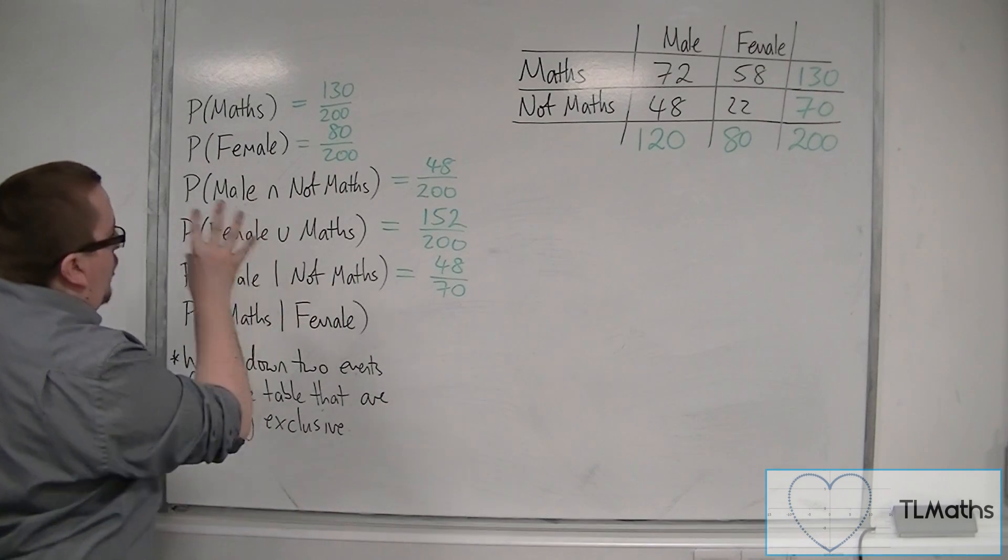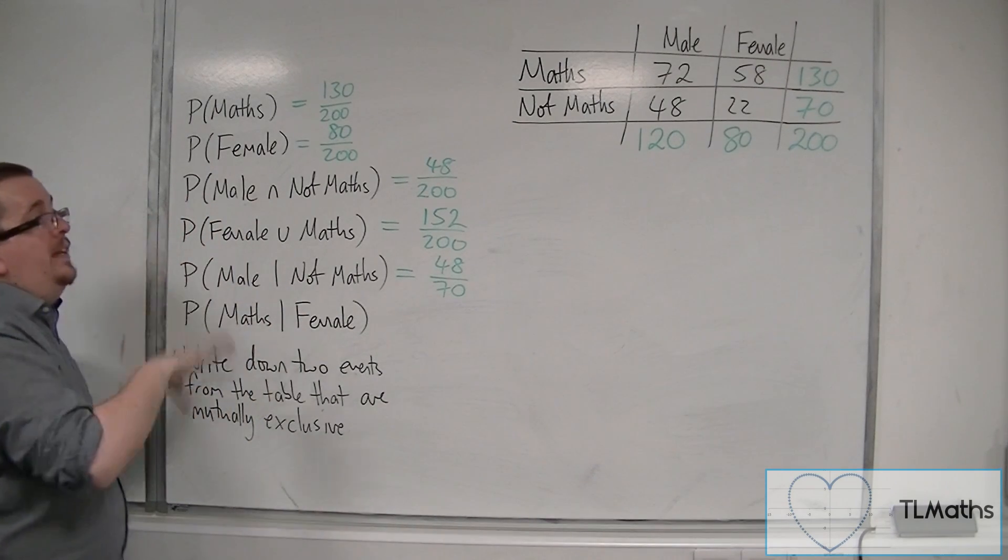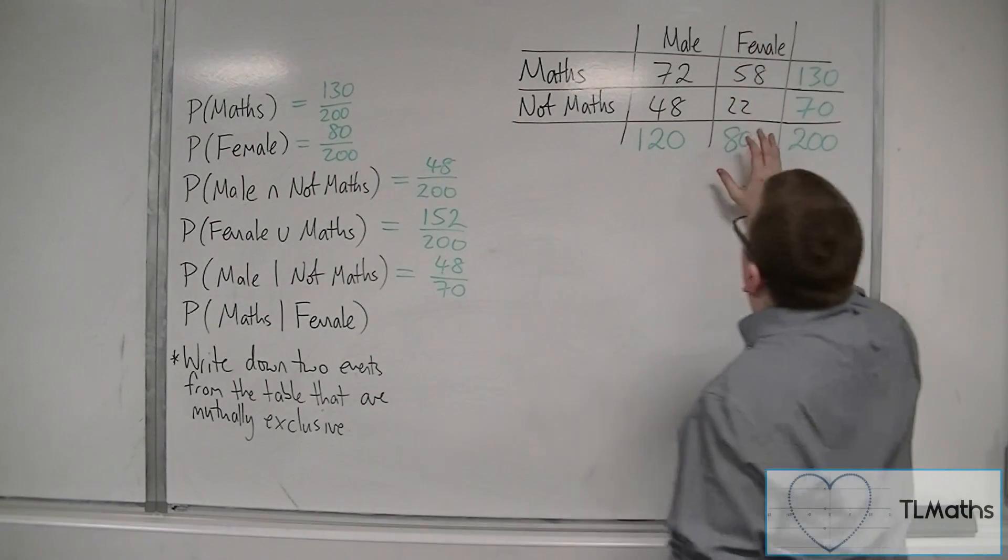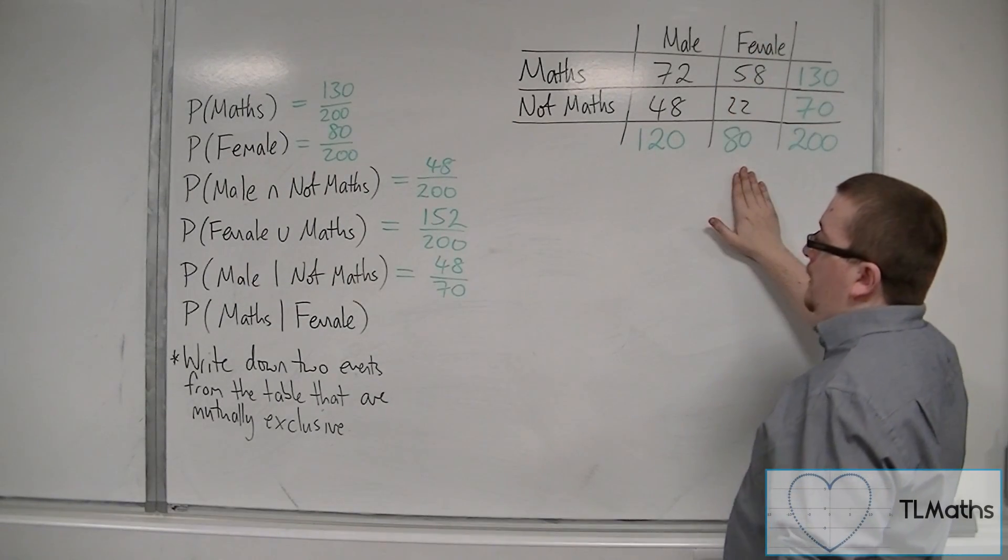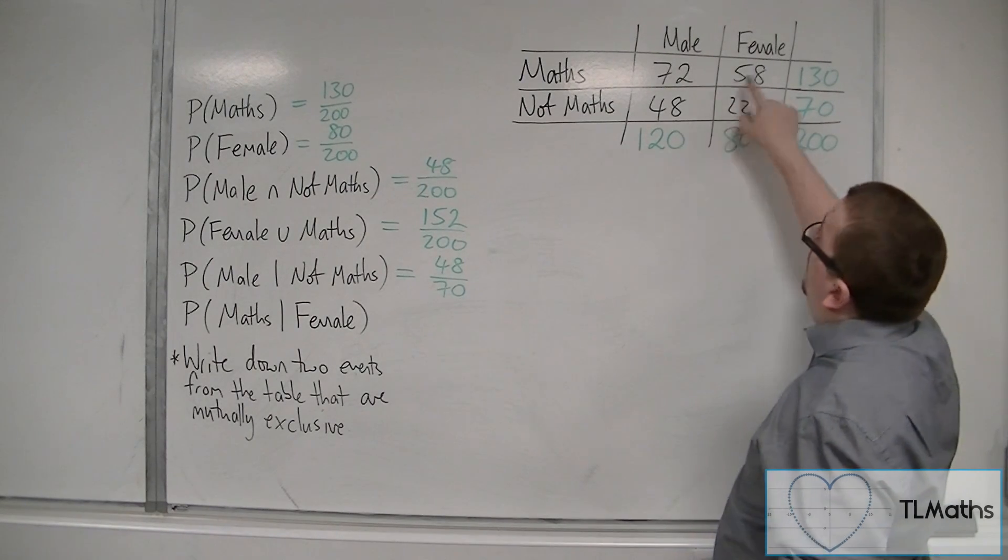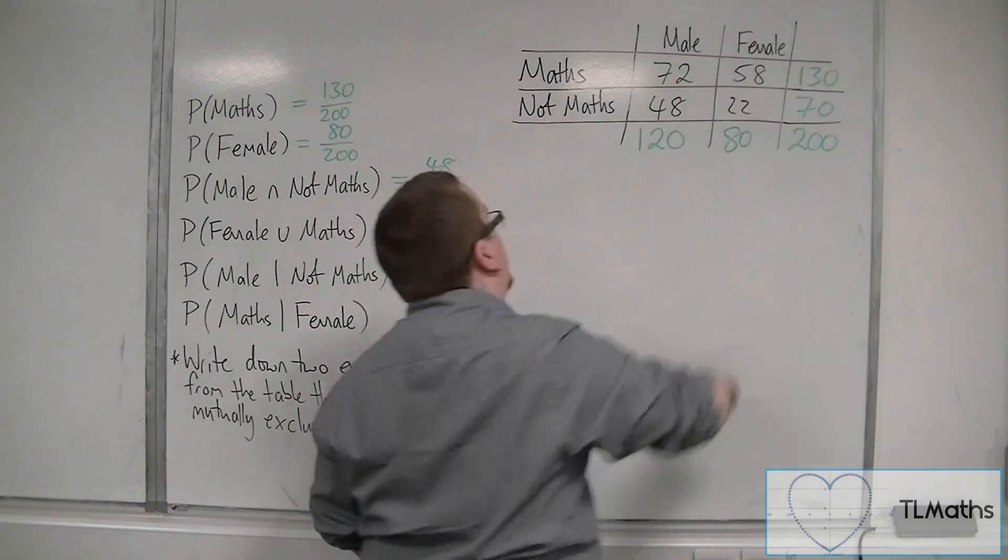And finally, we've got probability of a student studying maths, given that they are female. So given that they're female, you're just looking at that column. So it's out of 80 students. So the probability of a student studying maths is 58 out of the 80.